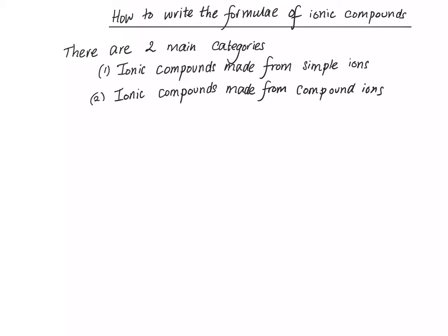The easiest way to write this is to recognize there are two different types of ionic compounds you're probably going to come across. There are ionic compounds which are made from simple ions and ionic compounds which are made from compound ions.